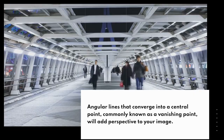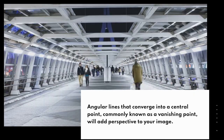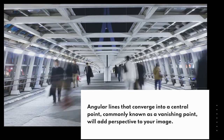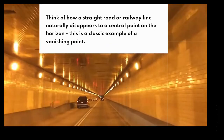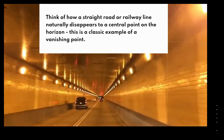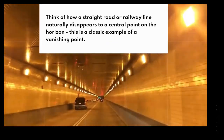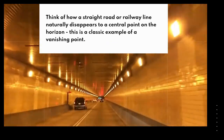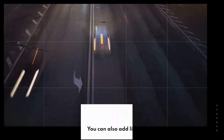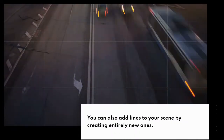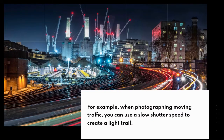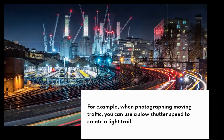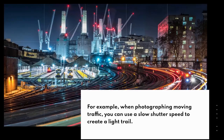Angular lines that converge into a central point, commonly known as a vanishing point, will add perspective to your image. Think of how a straight road or railway line naturally disappears to a central point on the horizon — this is a classic example of a vanishing point. You can also add lines to your scene by creating entirely new ones; for example, when photographing moving traffic, you can use a slow shutter speed to create a light trail.